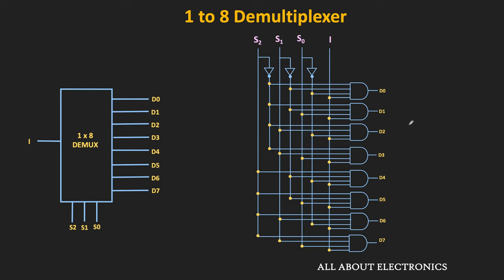As we scale up to larger demultiplexers, we need AND gates with more inputs, which increases design complexity and cost. That is why large demultiplexers are typically implemented using smaller demultiplexers.